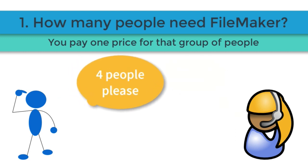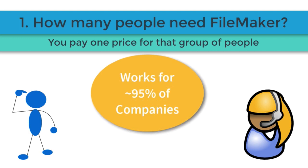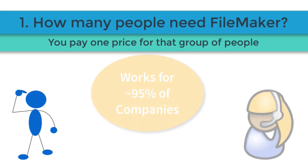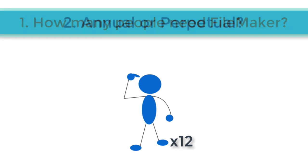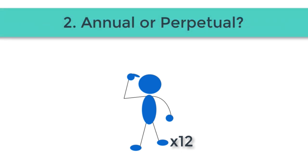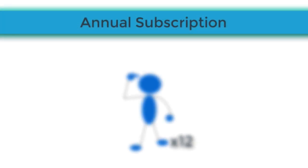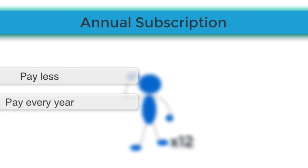This licensing program works for probably 95% of companies out there. For example, if you're on a team and decide you need 12 copies of FileMaker, you'll have a couple of additional choices. You can either buy the software on an annual subscription, which means you pay less — typically about one third of the normal price — but you pay it every year.